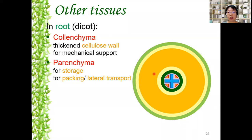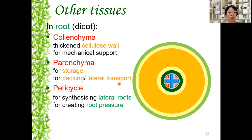Parenchyma is a tissue made of parenchyma cells, mainly used for storage, packing to fill up space, and lateral transport — material transported from cell to cell provides a medium for lateral transport across roots, stems, and leaves. Pericycle is a layer below the endodermis — after epidermis, cortex, endodermis comes pericycle. 'Peri' means perimeter and 'cycle' means in a circle, so it surrounds the xylem and phloem. Pericycle's function is to synthesize lateral roots.